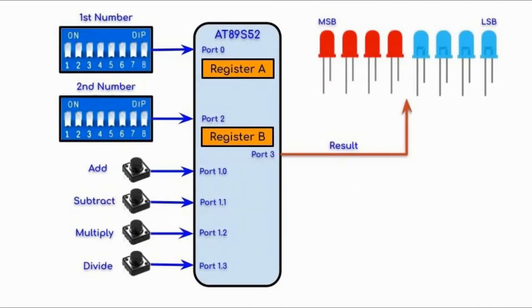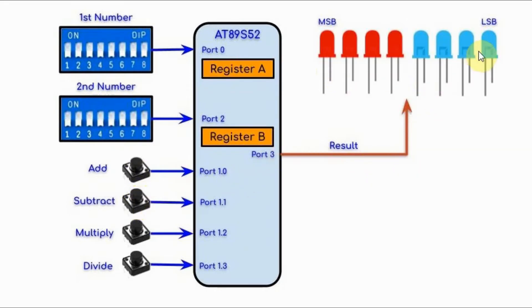The operation of the calculator is as follows. We set the first number on the DIP switch, and the number is then copied into register A. We set the second number on the second DIP switch, and the number is copied into register B. If we press the add or subtract button, the result is displayed on the 8-bit LED display, where one end represents the least significant bit and the other represents the most significant bit.